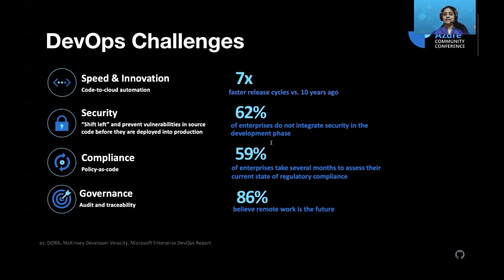The second challenge is security. 62% of enterprises said they don't integrate security into their development phase. They also said they only test security vulnerabilities for a major release or when actually releasing to production. In fact, many enterprises do not realize the importance of security until they are met with an incident. So shift-left is a powerful mechanism that can help these enterprises overcome some of these security challenges.